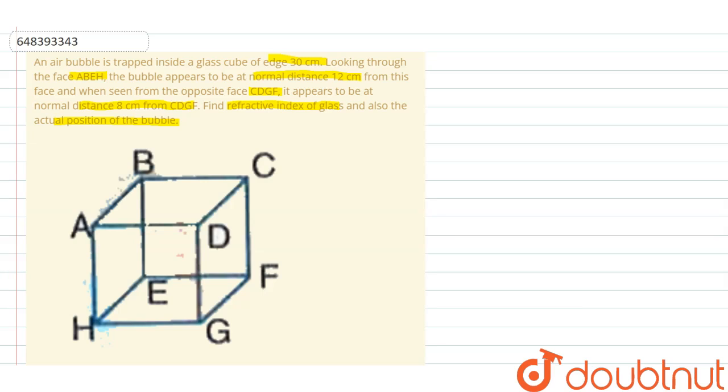We can determine mu using the relation between actual and apparent distances from the refracting surfaces.